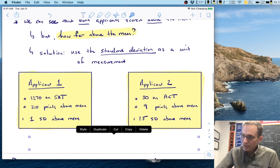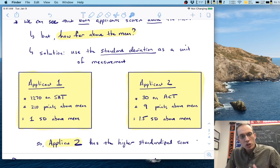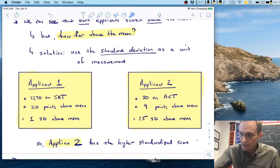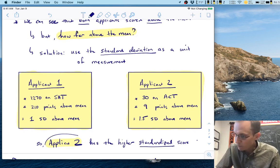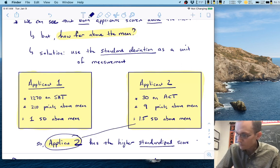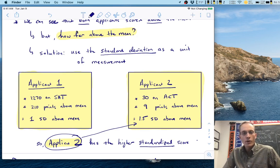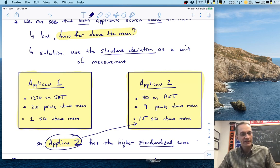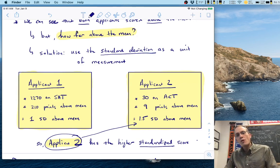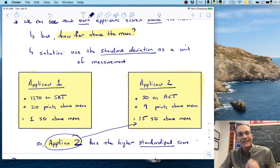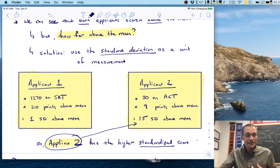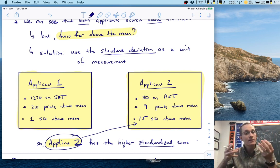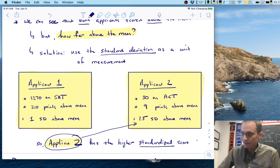Now the standard deviation for the ACT is six points. So if this person scored nine points above the mean, nine points is one and a half of those standard deviations. And so what that means is applicant two scored 1.5 standard deviations above the mean. Now, why is this useful? Well, now we can do a comparison and we can see immediately that applicant two has the higher standardized score. Why is that? Well, the reason is because applicant two, in terms of standard deviations, they scored one and a half standard deviations above the mean, whereas applicant one only scored one standard deviation above the mean. And so even though applicants one and two are on completely different measurement scales, we are able to directly compare them. If we can somehow transform those raw scores, the raw SAT score and the raw ACT score onto something that's the same and thus can be compared. And that's exactly what we get with standardized scores.